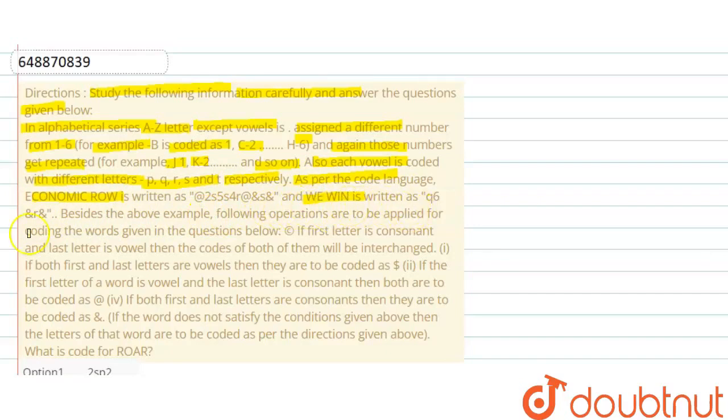following operations are to be applied for coding the words given in questions below. If first letter is consonant and last letter is vowel, then the code of both them will be interchanged. Second condition: if both first and last letter are vowels, then they are coded as dollar sign.